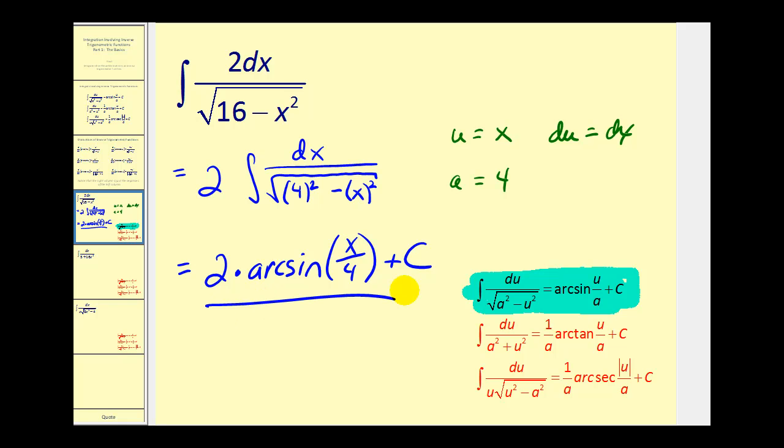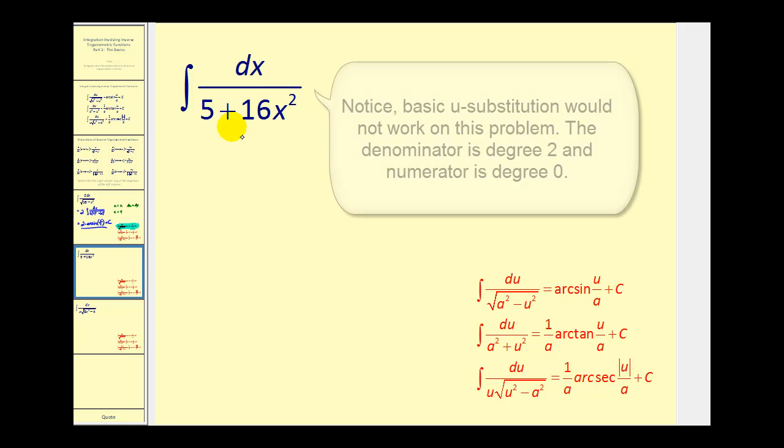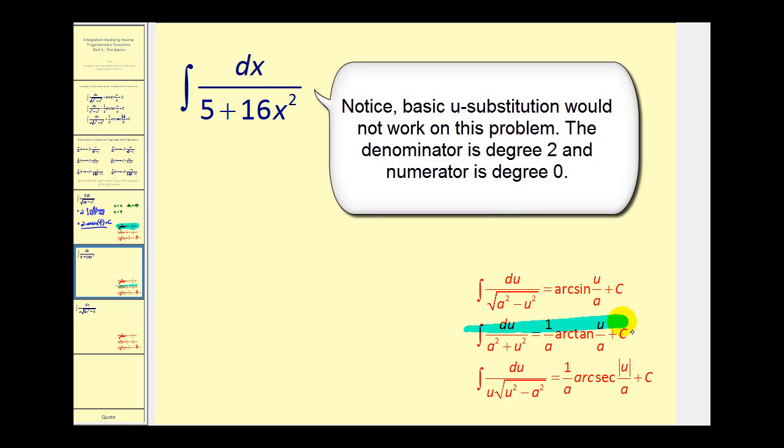So this one was pretty straightforward. Let's go ahead and take a look at another one. Again, step one is to identify the correct formula. Notice our denominator does not have a square root. So we're looking at the second formula now. So our antiderivative should involve arctangent.